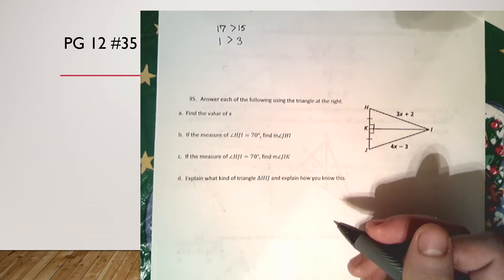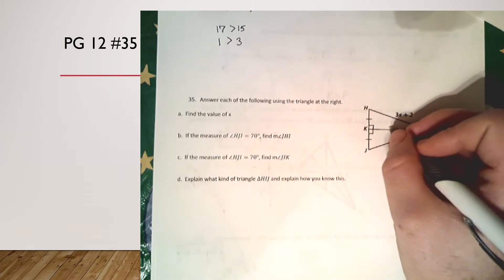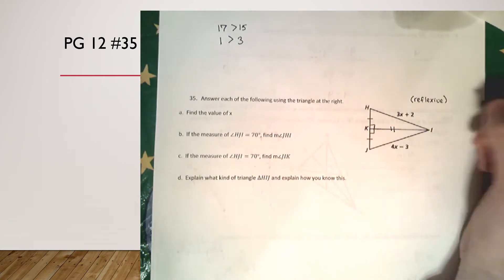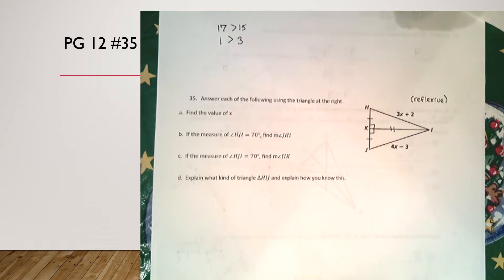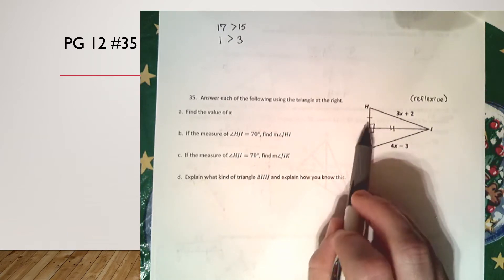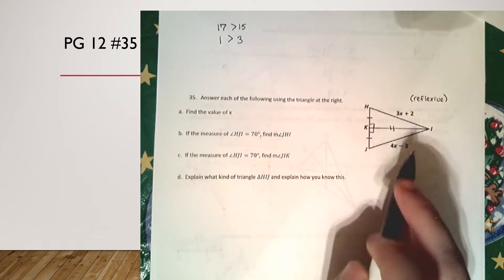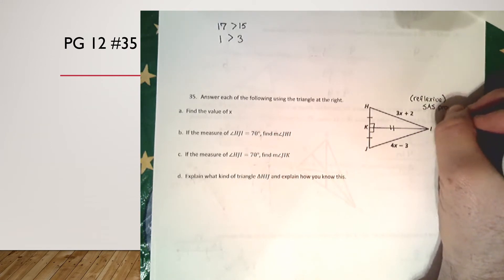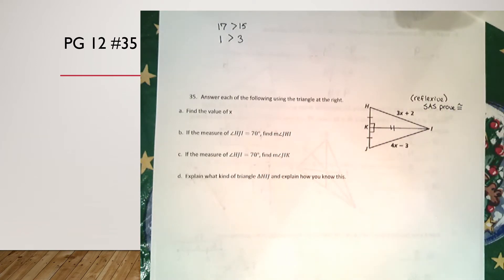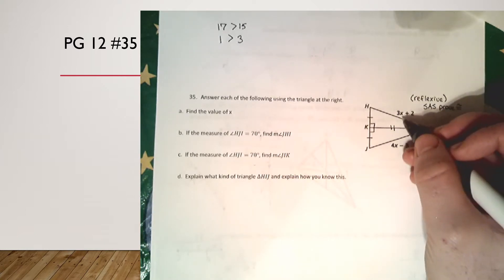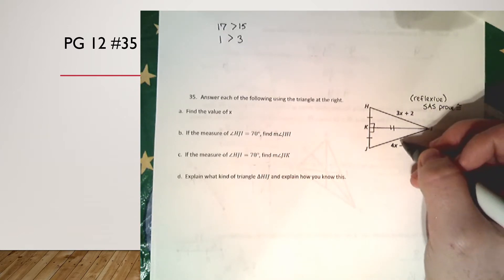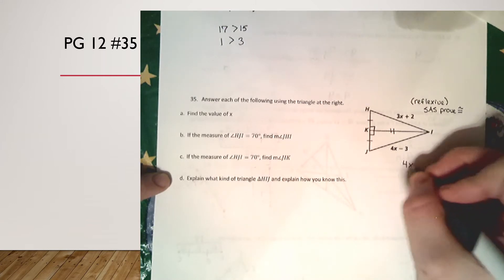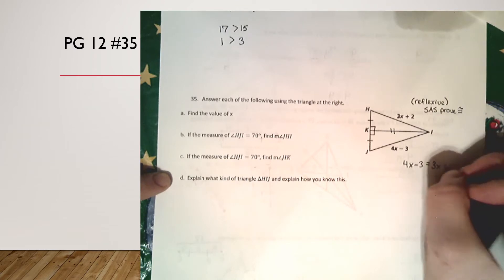There's something I can assume just by seeing it — that's the reflexive property. Reflexive is when two triangles share the same side. So now I have a side, an angle, and a side — side-angle-side — which can prove congruence. If they are congruent, then this side and this side are equal to each other, so I can set up 4x minus 3 equals 3x plus 2 to solve for x.